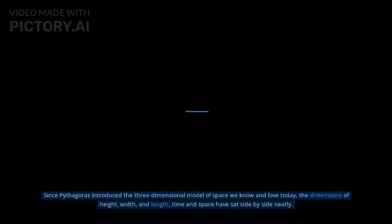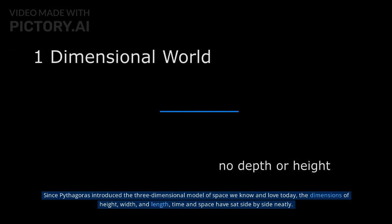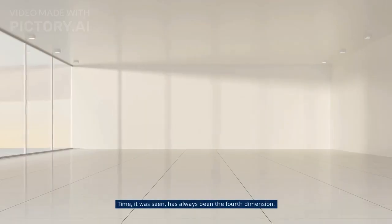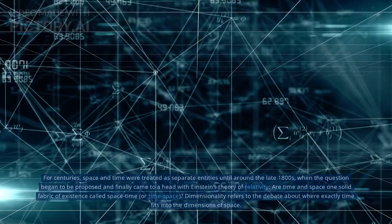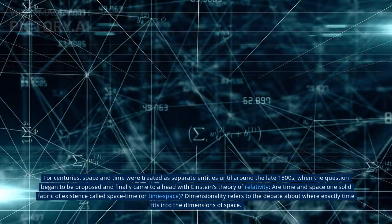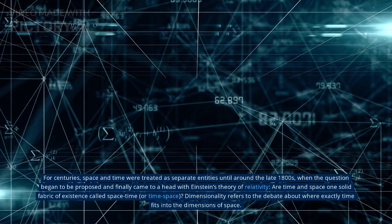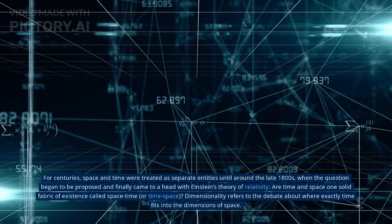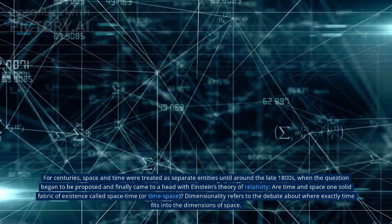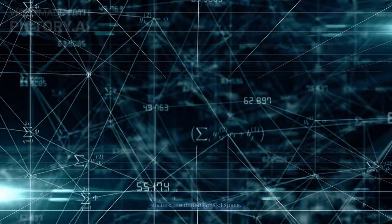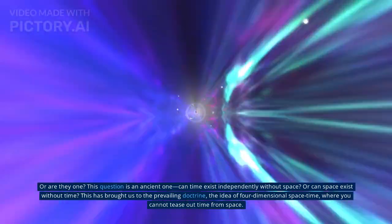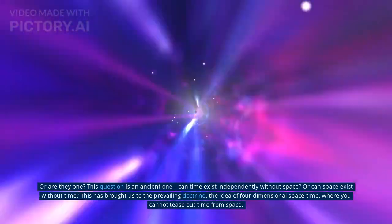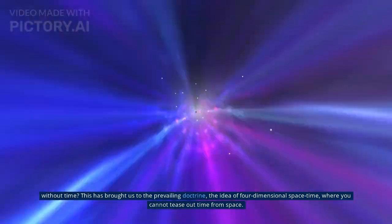Number 8: Dimensionality. Since Pythagoras introduced the three-dimensional model of space we know and love today, the dimensions of height, width, and length, time and space have sat side by side neatly. Time, it was seen, has always been the fourth dimension. For centuries, space and time were treated as separate entities until around the late 1800s, when the question began to be proposed and finally came to a head with Einstein's theory of relativity. Are time and space one solid fabric of existence called space-time or time-space? Dimensionality refers to the debate about where exactly time fits into the dimensions of space. Or, are they one? This question is an ancient one: can time exist independently without space? Or, can space exist without time? This has brought us to the prevailing doctrine, the idea of four-dimensional space-time where you cannot tease out time from space.